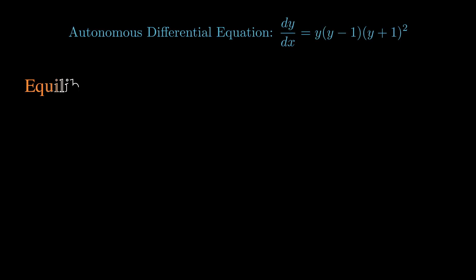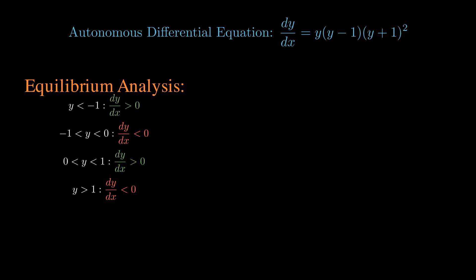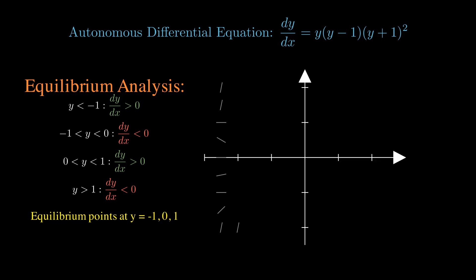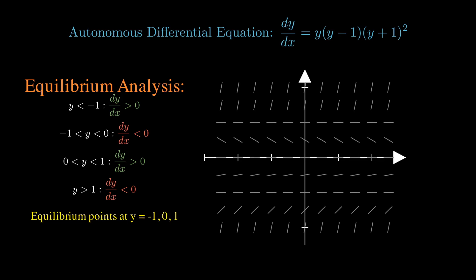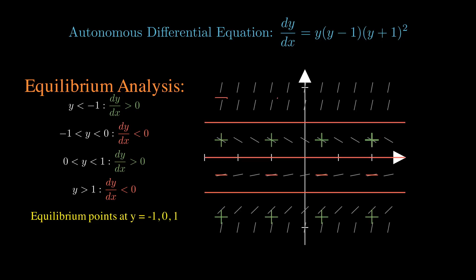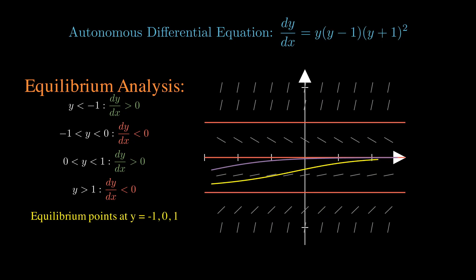Autonomous differential equations are really interesting because the derivative does not depend on x at all. What this means is that we can find specific ranges of y where we directly know whether the slope is positive or negative. Hence, we can directly split the direction field into different sections where we know solutions will increase or decrease, making drawing solutions extremely easy.